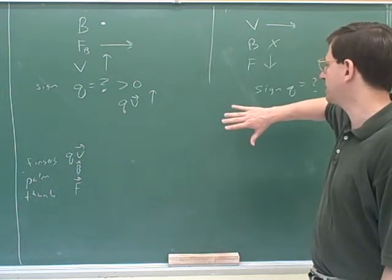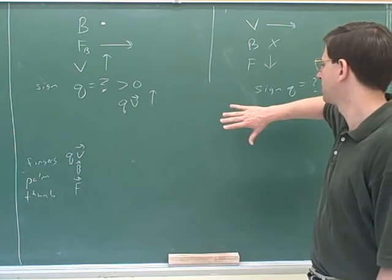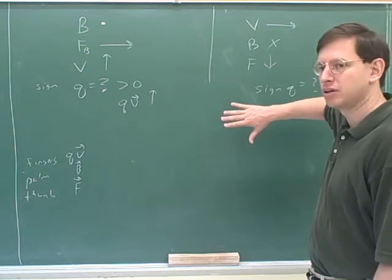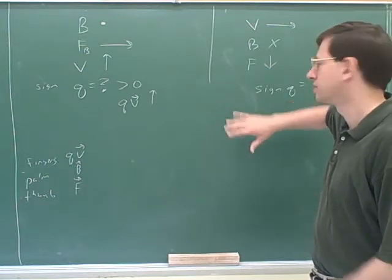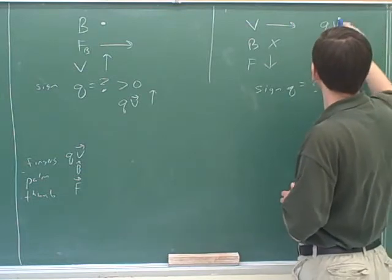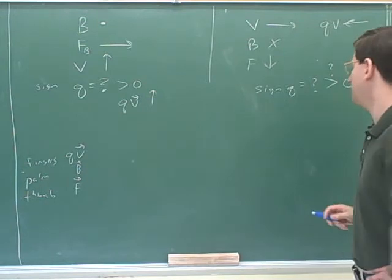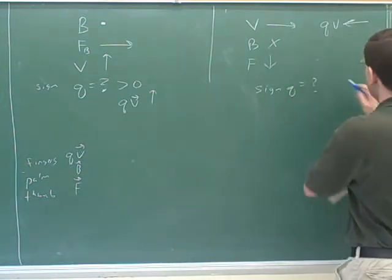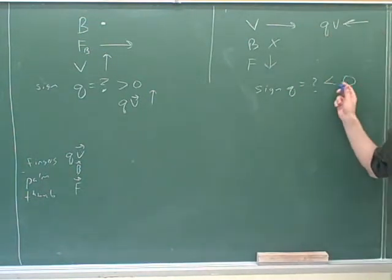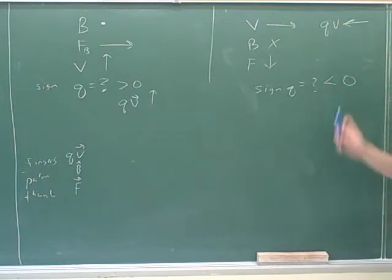And then what's the direction of qv? To the left. Oh, it's negative. But we already know that v is to the right. How can v and qv be in opposite directions only if the charge was really negative? Yeah.